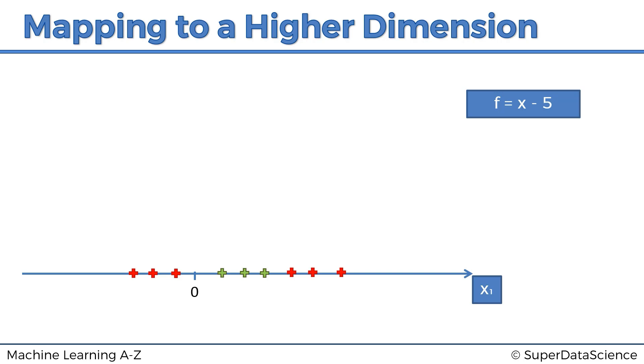And then the next step would be to square all of that. So F is now equals to X minus five squared. So how will that all look like? Well, basically you'll have this squared function going through your chart. And then all of these will be projected onto the function. There we go. So that's what it looks like. F equals X minus five squared.